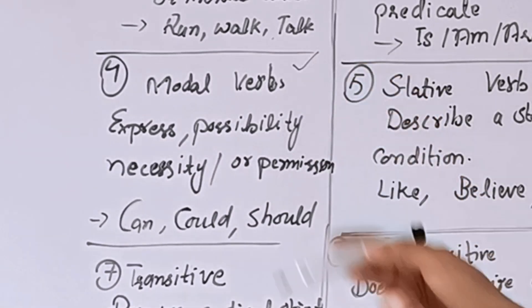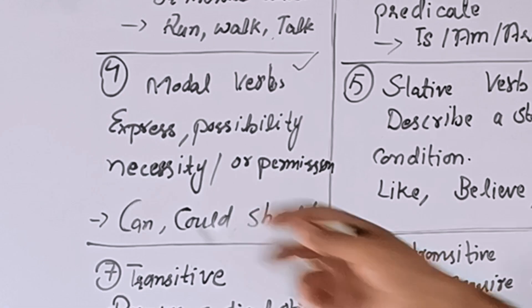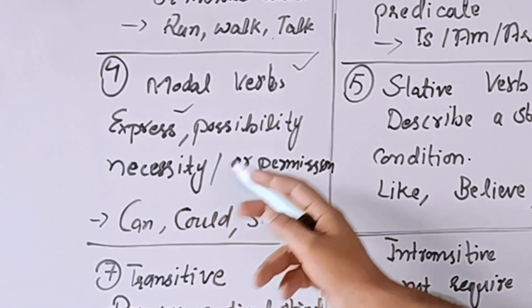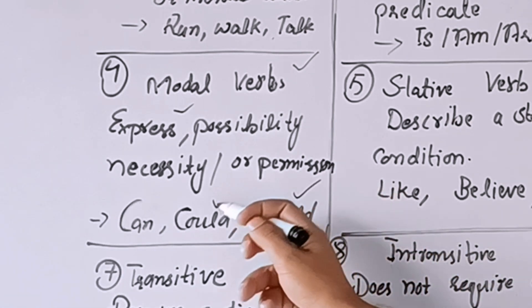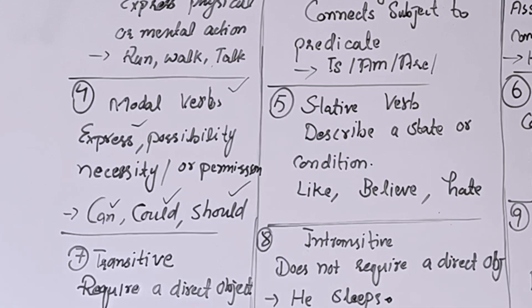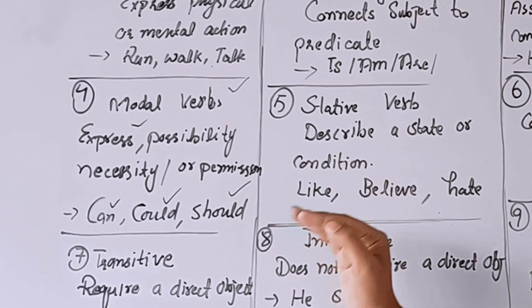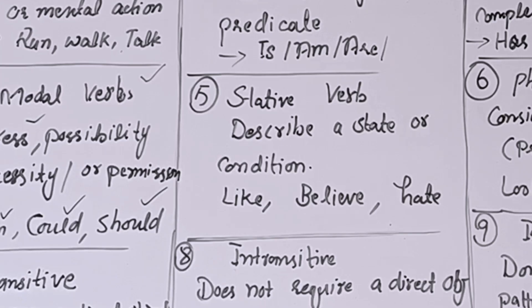The next type is modal verbs. Modal verbs can sometimes be very tricky because of their different usage. جب ہم کسی possibility، necessity، ability، probability یا permission کو express کریں تو وہاں پر جو auxiliary verbs استعمال ہوتے ہیں وہ modal auxiliary verbs کہلاتے ہیں — جیسے could، would، might، shall، should۔ ان کا detailed use ہم بعد میں discuss کریں گے۔